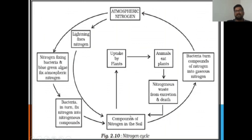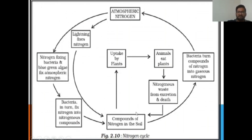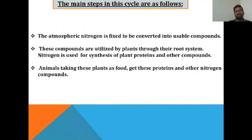These nitrogenous compounds are taken up by plants, and then by animals that eat those plants. The waste from animals, and dead bodies of animals, are decomposed and the nitrogenous waste is converted back into nitrogenous compounds. These compounds are then denitrified by denitrifying bacteria, which convert the nitrogenous compounds back into atmospheric nitrogen.